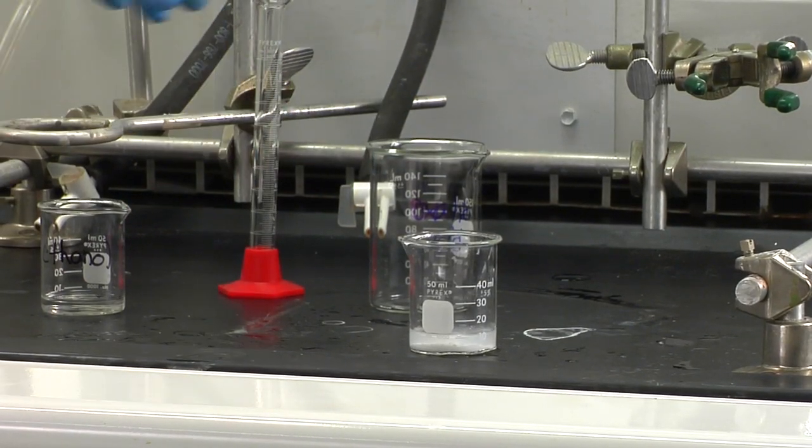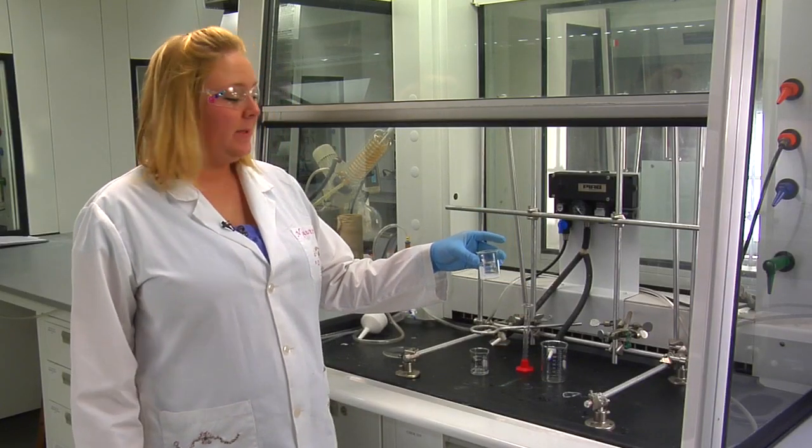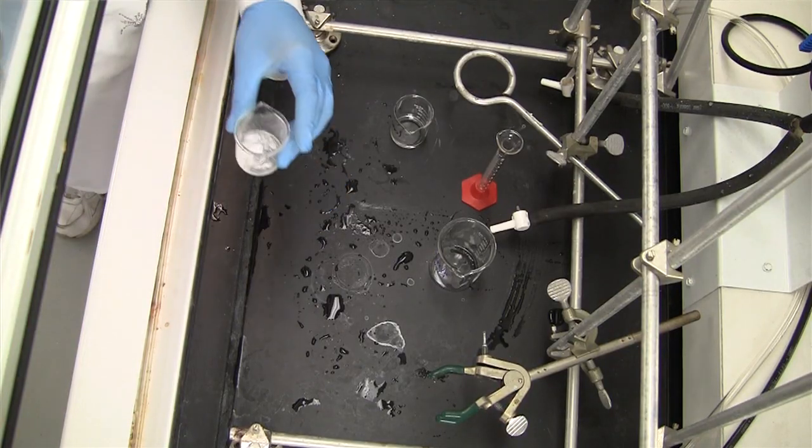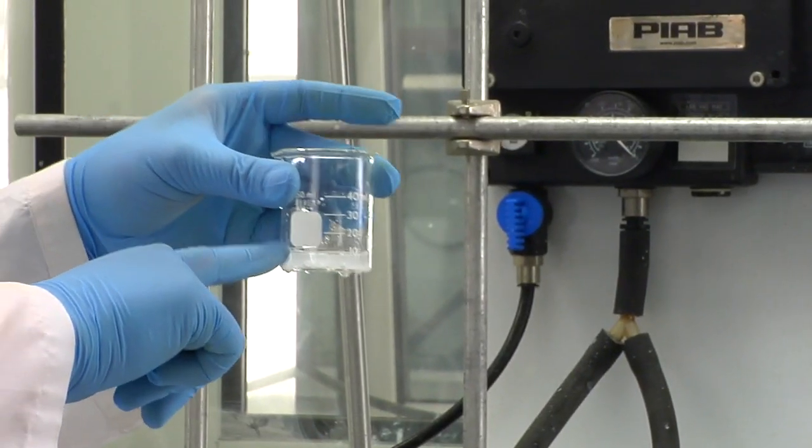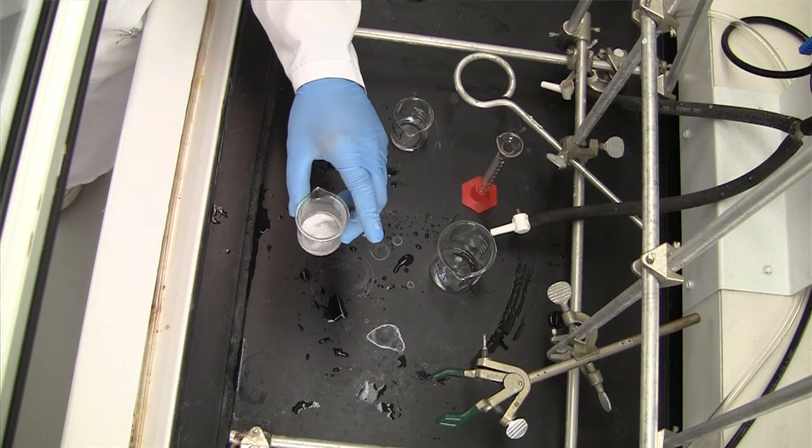We're going to mix that together. We're then going to dissolve this on the steam bath set up in a separate hood. You want to make sure that the level of ethanol stays the same. You can do this by adding a watch glass to the top or just adding ethanol as needed.